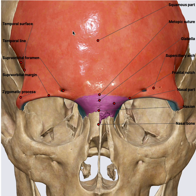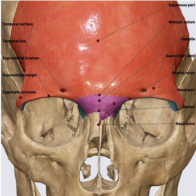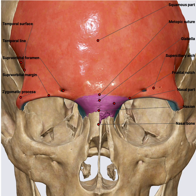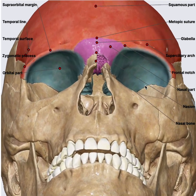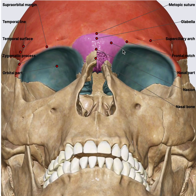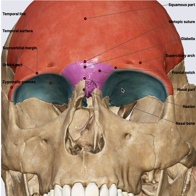That covers the squamous part. Moving on to the next area — the orbital part. This is the orbital part of the frontal bone, which forms the roof of the orbit and also the floor of the frontal sinus.